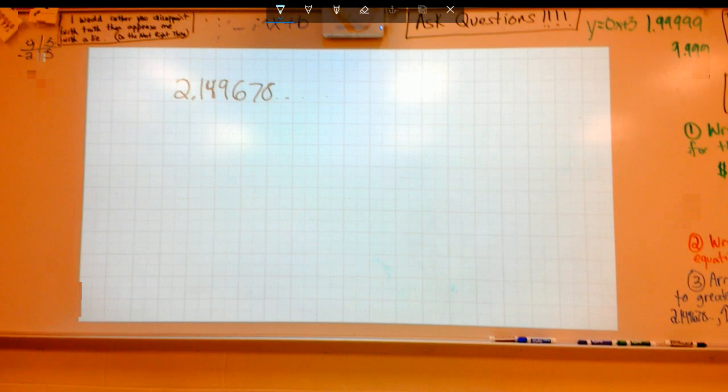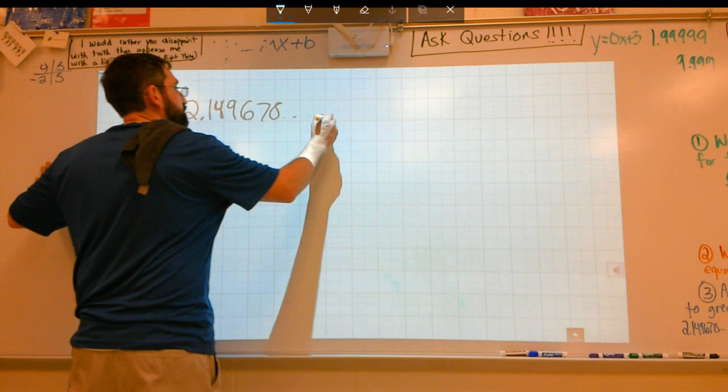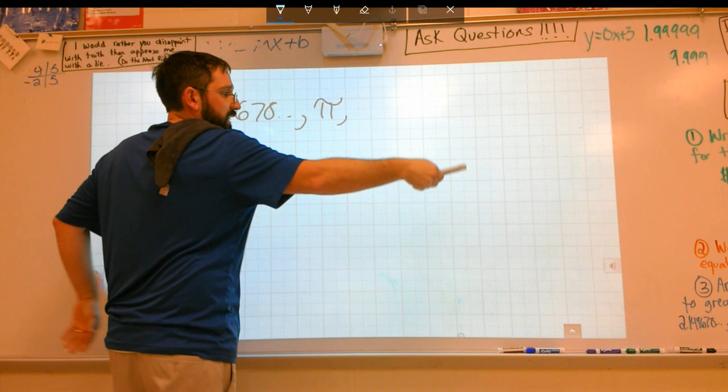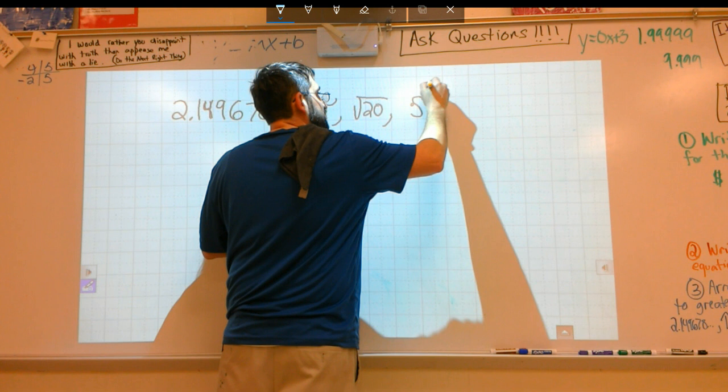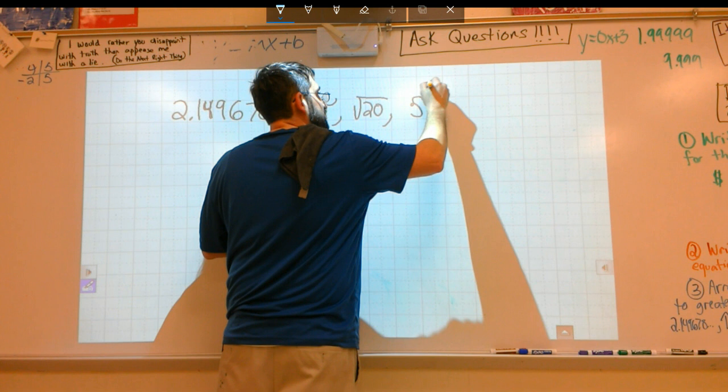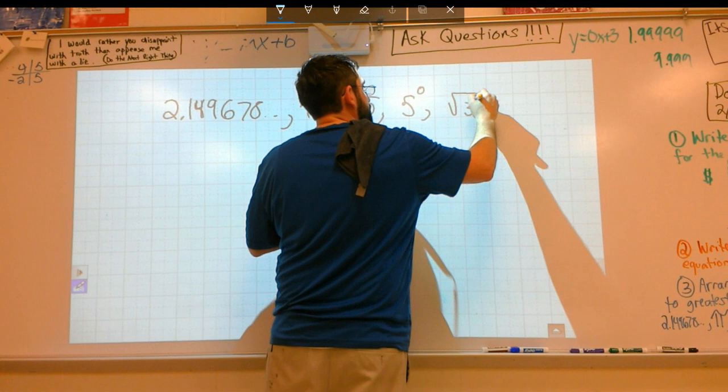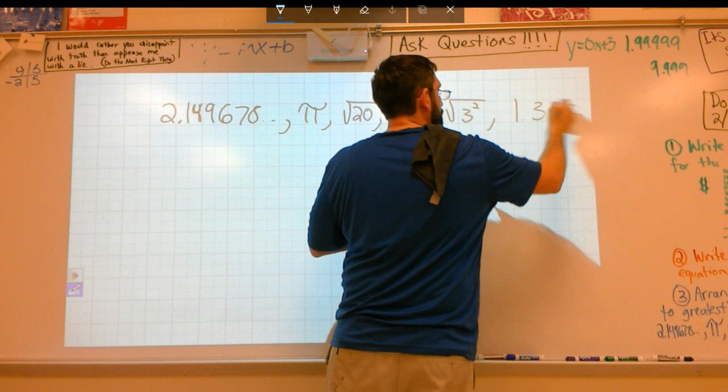All right. The next number we have is pi. Guys, we're going to arrange these numbers from least to greatest. What's the next one we have? The square root of 20. What's the next one? 5 to the power of 0. 5 to the 0 power? All right. Square root of 3. Square root of 3 squared? Yeah. 2 over 5. And 1.3... No, you skipped 1. 2 over 5. You said 2 over 5? Yeah. Sure. And then 1.33 repeating. 3 over 3. All right.